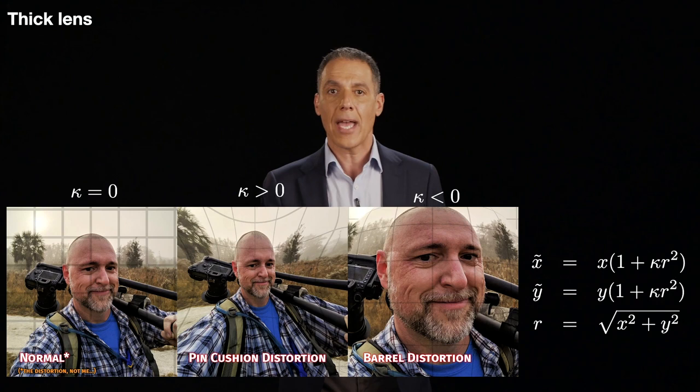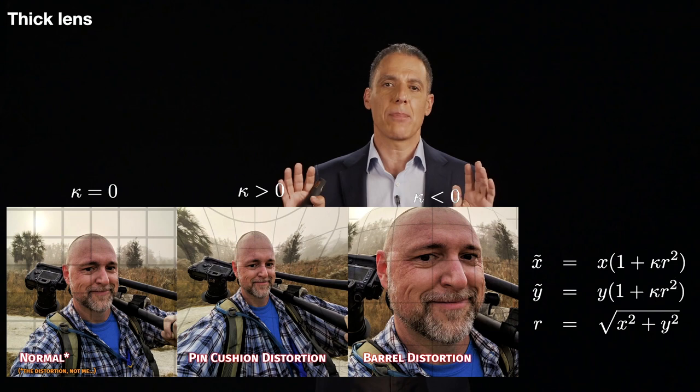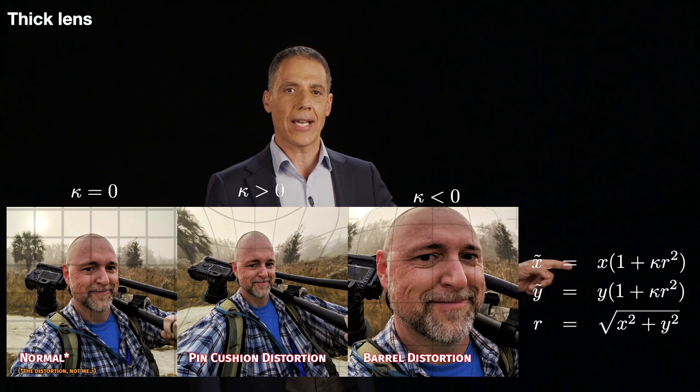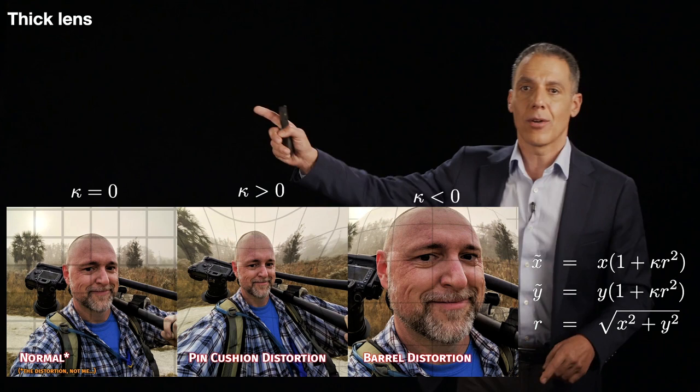And of course, Y hat is Y times one plus kappa R squared. So first of all, what happens if kappa is zero? Well, if kappa is zero, then what's going to happen is X hat is going to be equal to X because this whole term just boils down to one. So that means when kappa is zero, as you're seeing over here, there's no distortion. Notice this image has superimposed atop of it a grid.